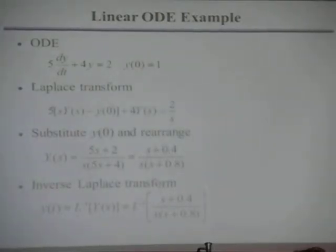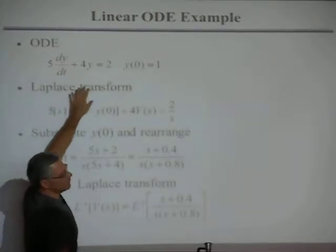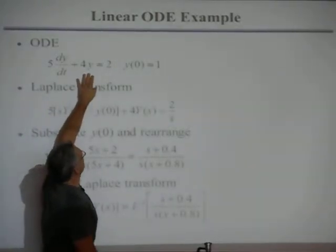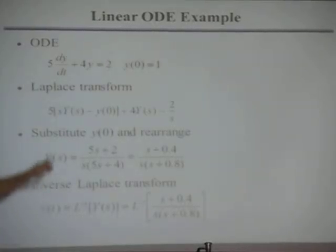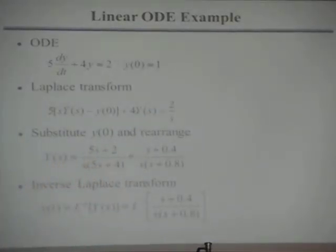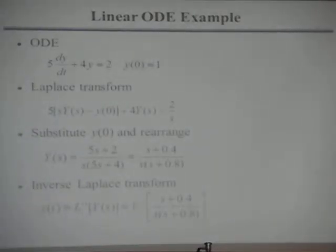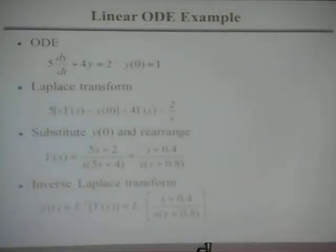We called it F before; now we're calling it Y — it doesn't make any difference. Then you have plus 4 times the Laplace transform of Y. The Laplace transform of Y(t) is called Y(S). And the Laplace transform of a constant like 2 is just that constant over S. So now we have an algebraic equation in S — what was a differential equation in Y is now an algebraic equation in capital Y. This is the power of the Laplace transform.